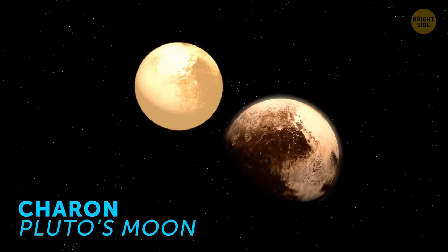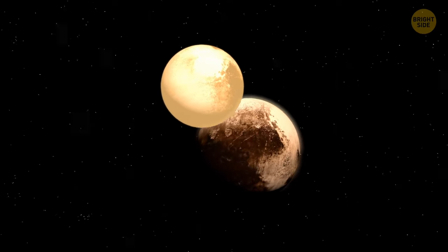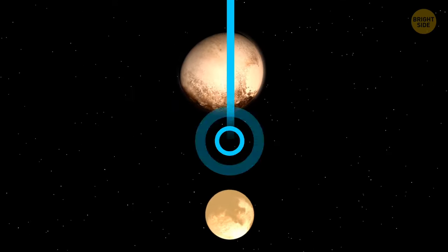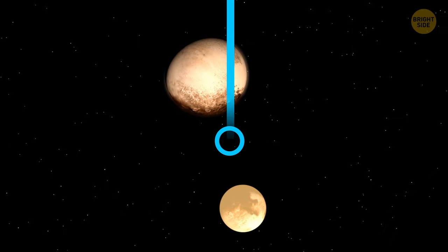Charon, Pluto's moon, is half the size of its planet, which is why Pluto orbits a bit around a spot outside its own axis.